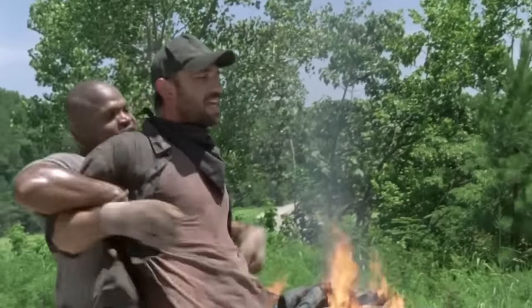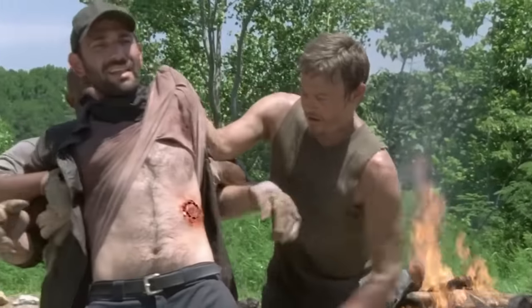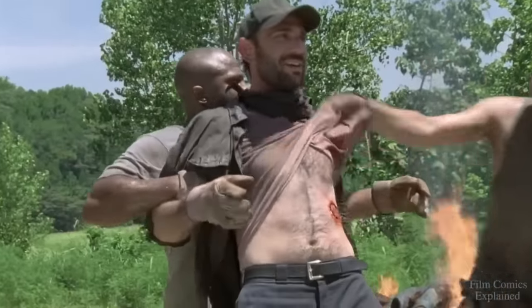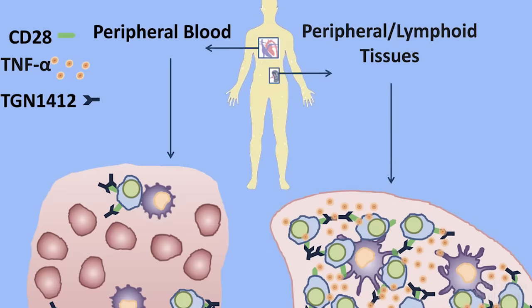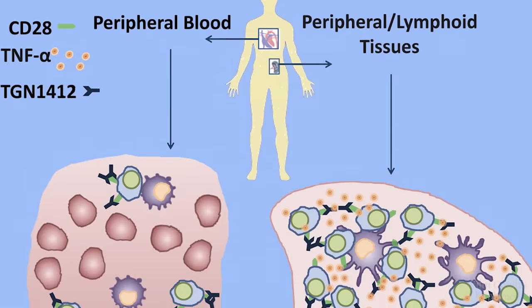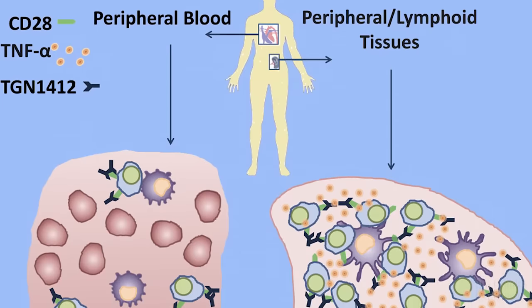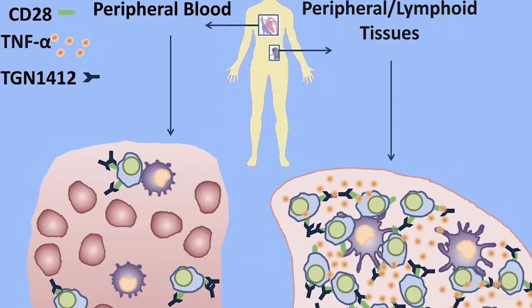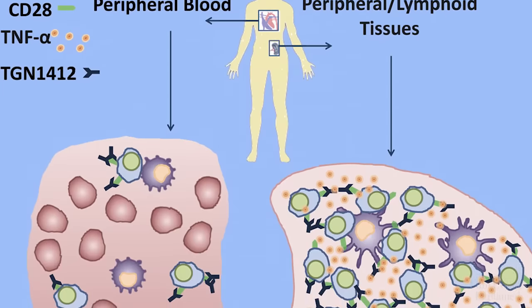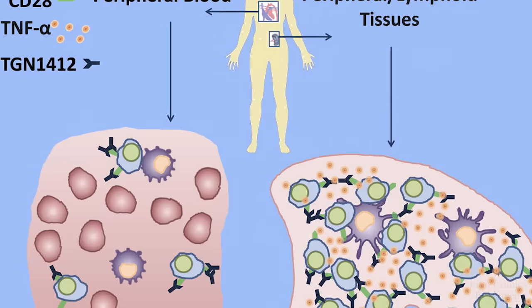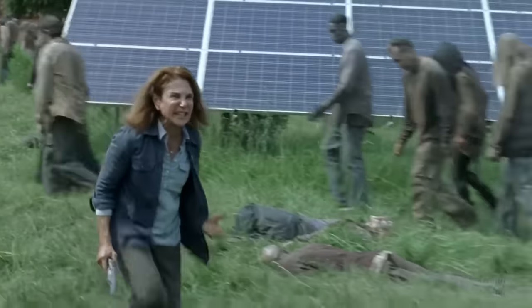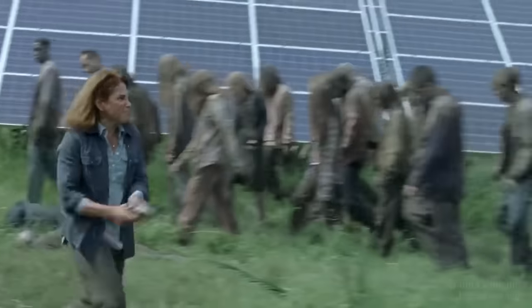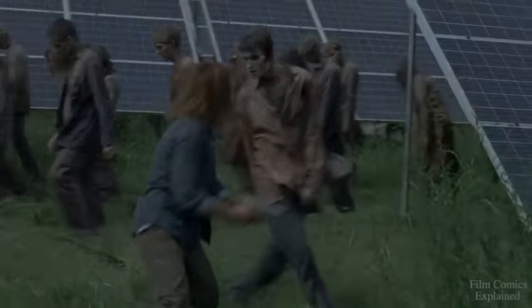What the bites and scratches caused by the walkers actually do is begin the process of irreversible contamination, as their blood and saliva, which contain an active strain of the virus, is believed to induce a cytokine cascade — a fatal immune reaction consisting of a positive feedback loop between cytokines and white blood cells — which is further exacerbated by the bacteria that resides in the mouths of zombies.